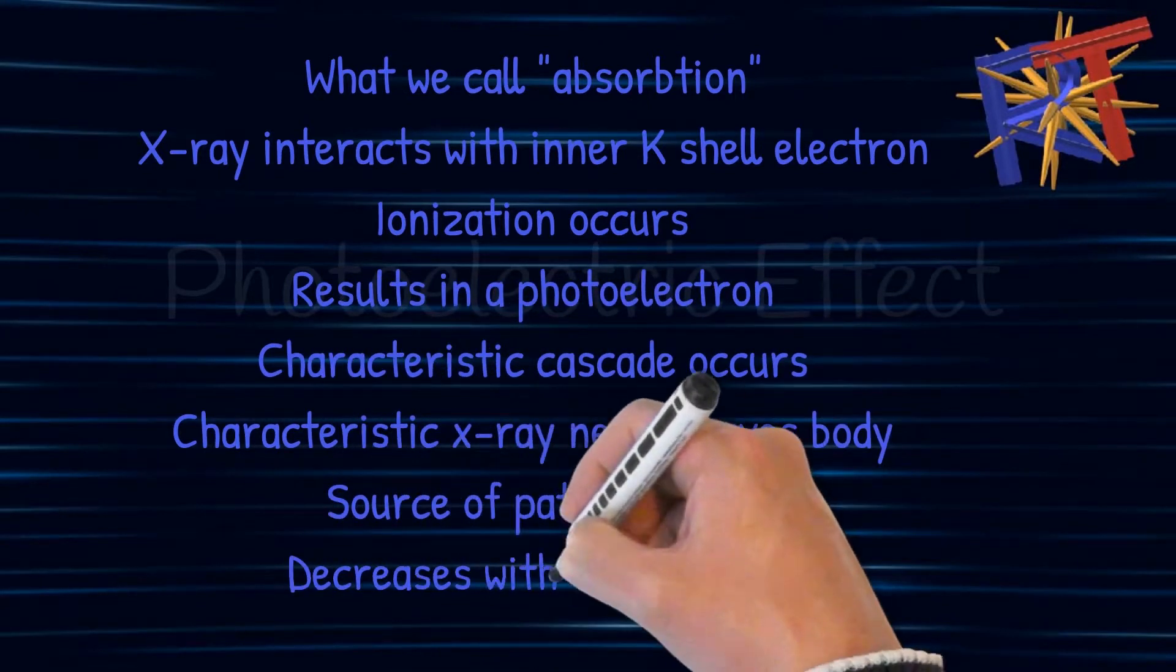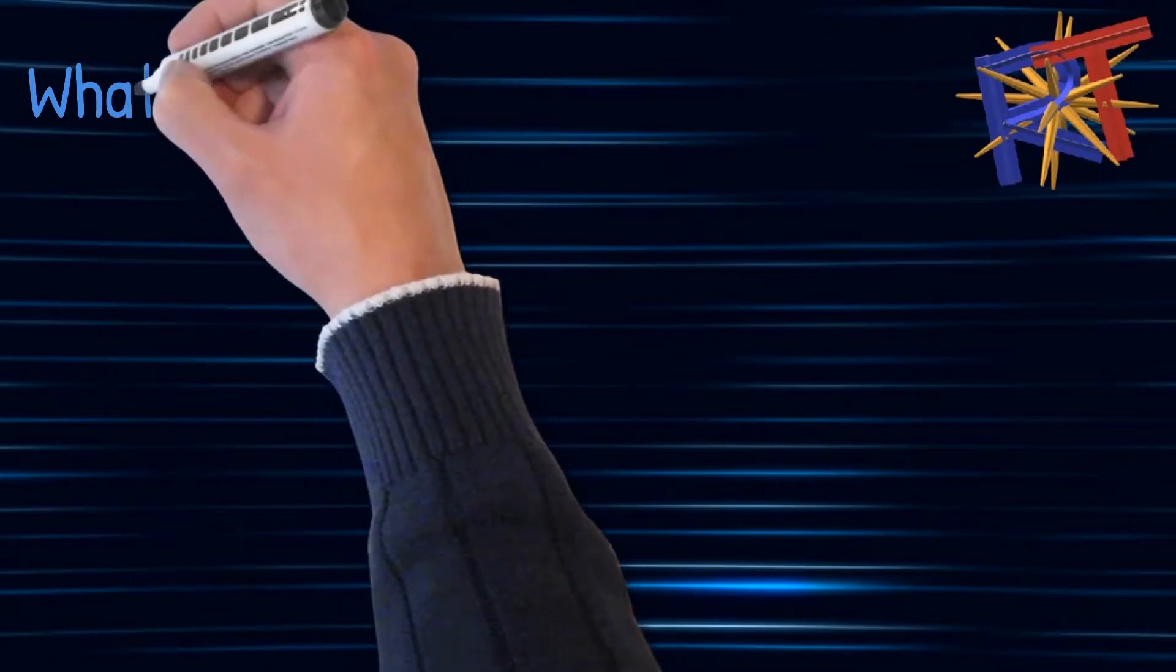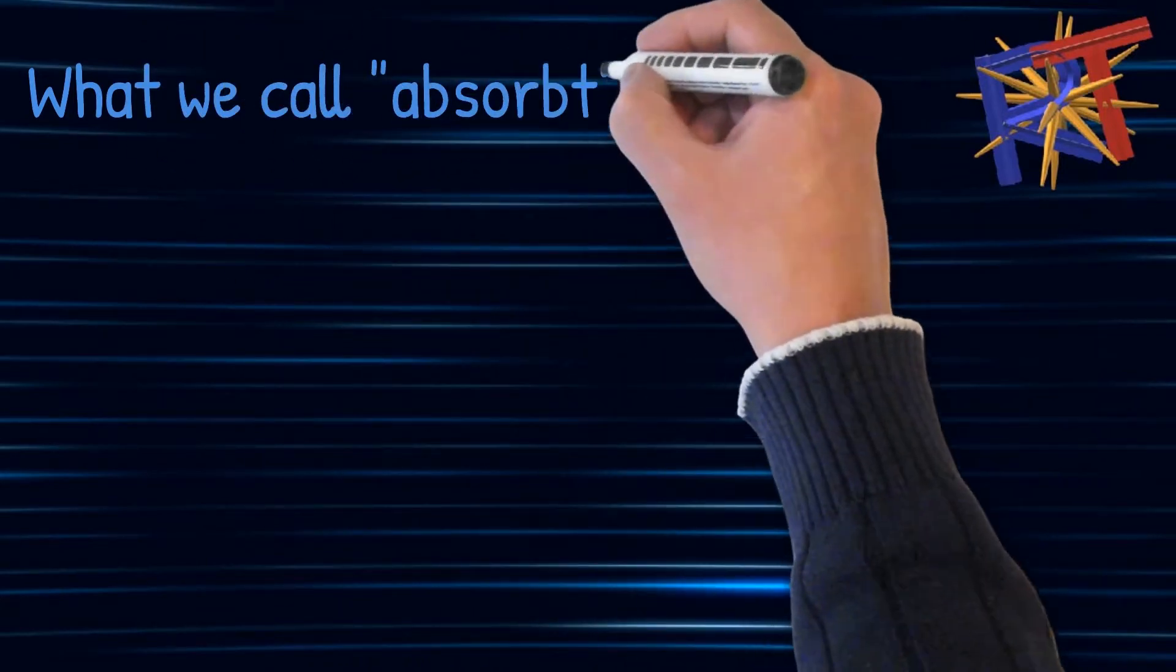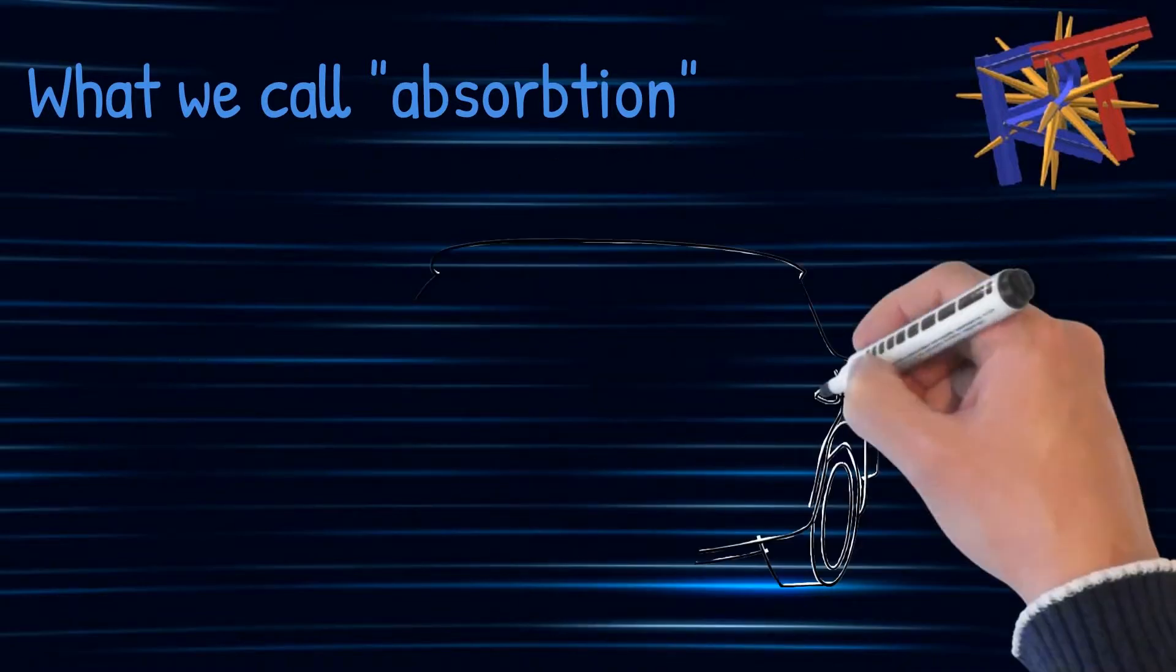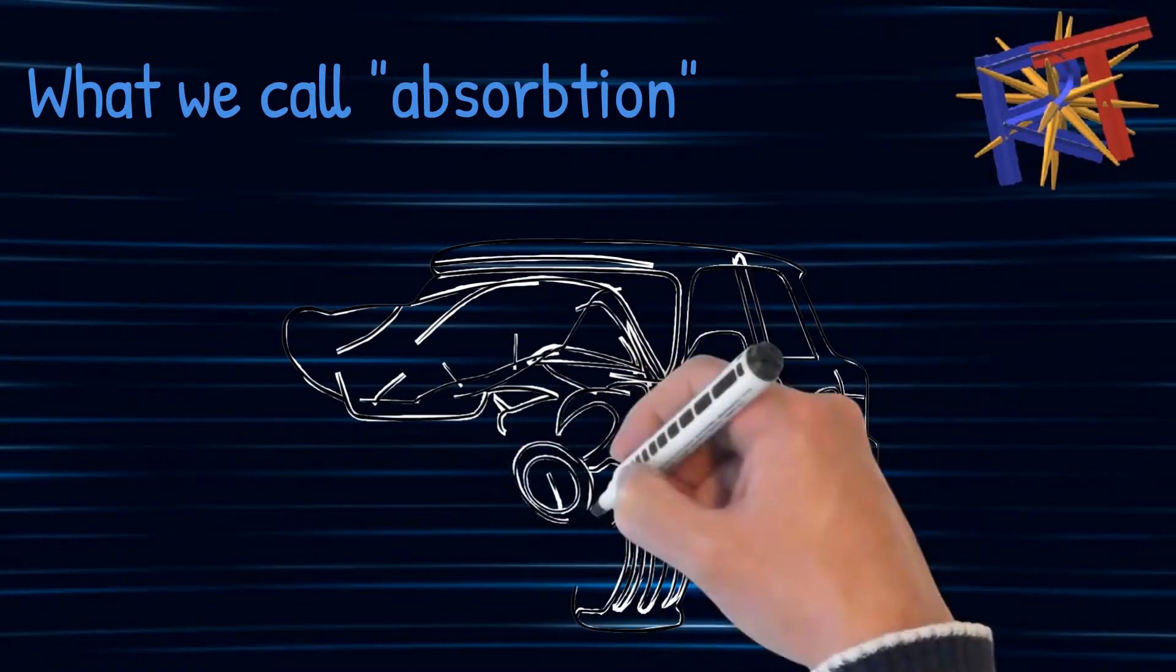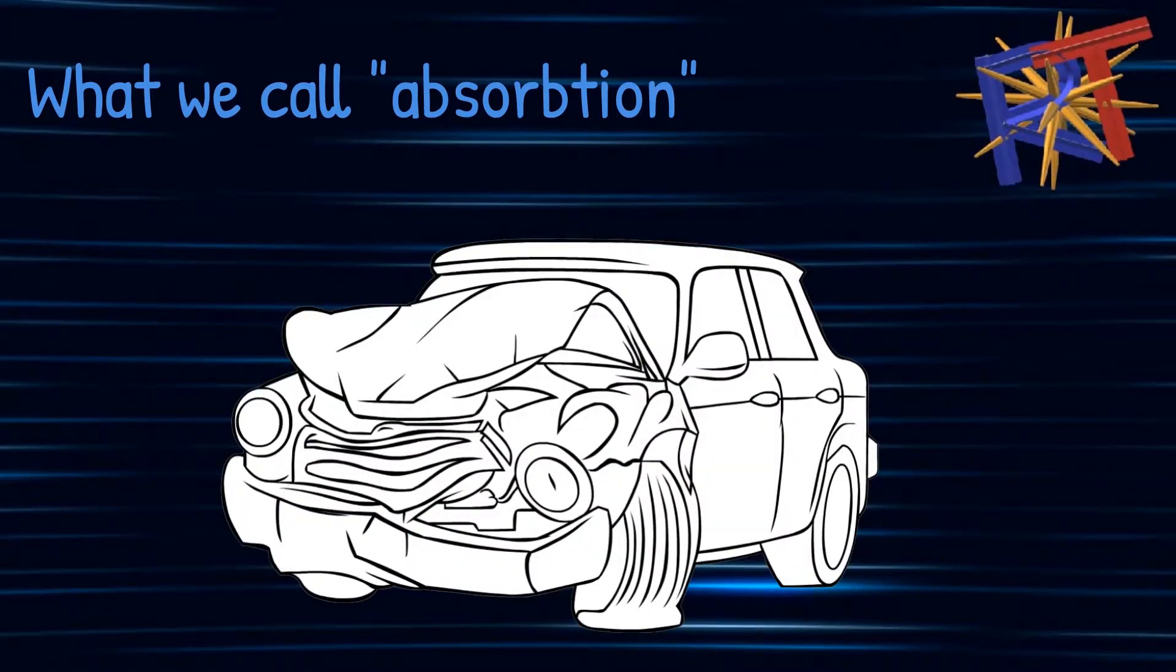The next effect I would like to talk about is photoelectric effect. Photoelectric effect is what we call absorption. The x-ray interacts with the inner k-shell. Ionization occurs. It results in a photoelectron. A characteristic cascade can occur. The characteristic x-rays never leave the body. It's the source of the patient dose and it also decreases with higher kvp settings.